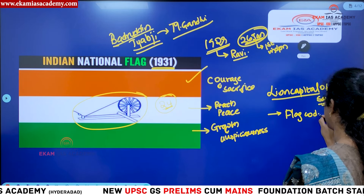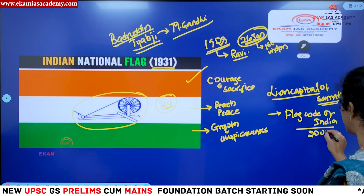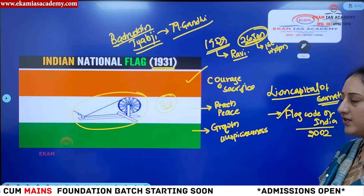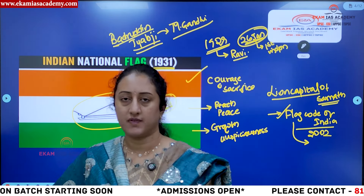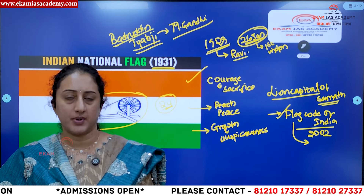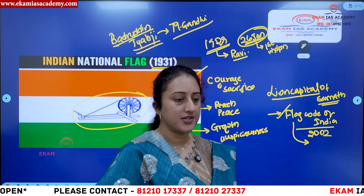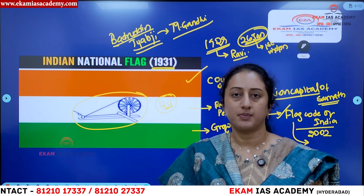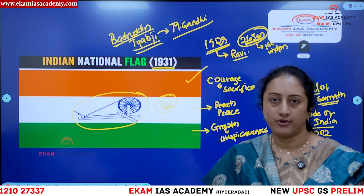The Flag Code of India was modified in the year 2002. Before this modification, we could only hoist the national flag on national holidays — Independence Day and Republic Day. With this modification, citizens now have the complete freedom to hoist the national flag with due care on all days, irrespective of whether it is a holiday. Also, previously we were not allowed to hoist the flag after sunset, but now you can hoist it after sunset provided there is proper illumination or lighting, so as not to degrade the dignity of the national flag.